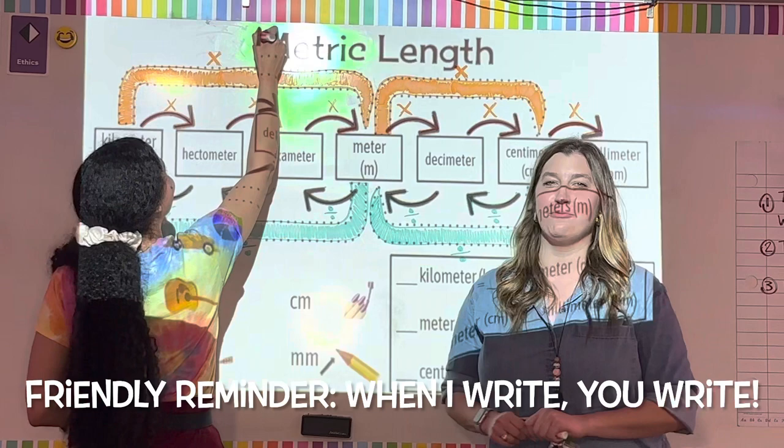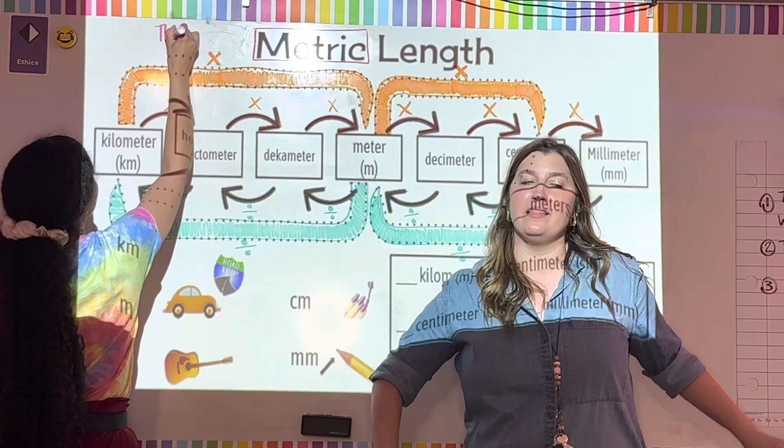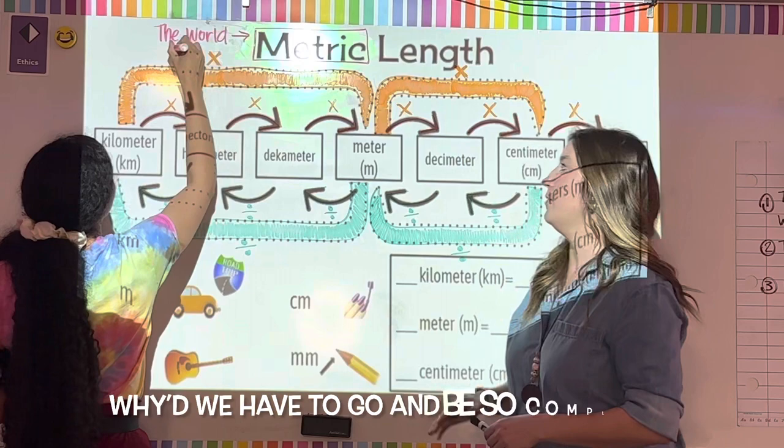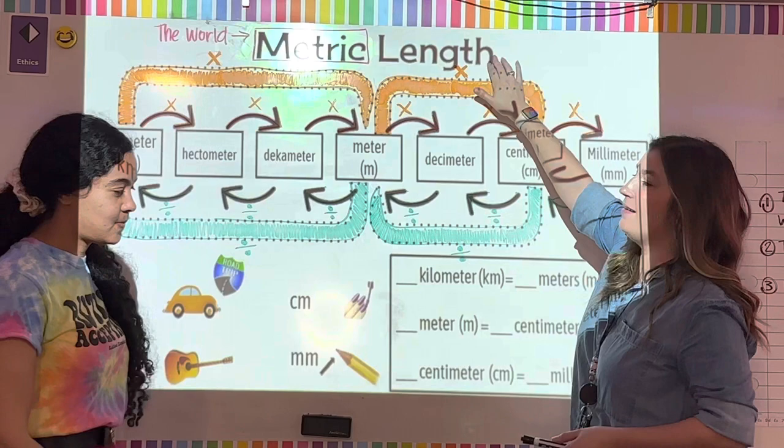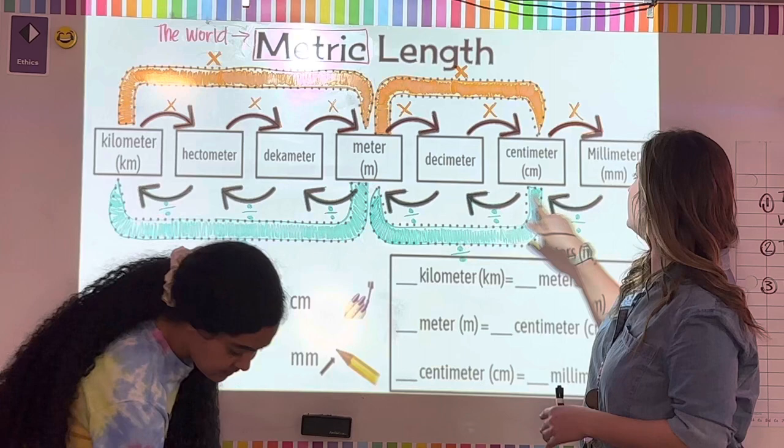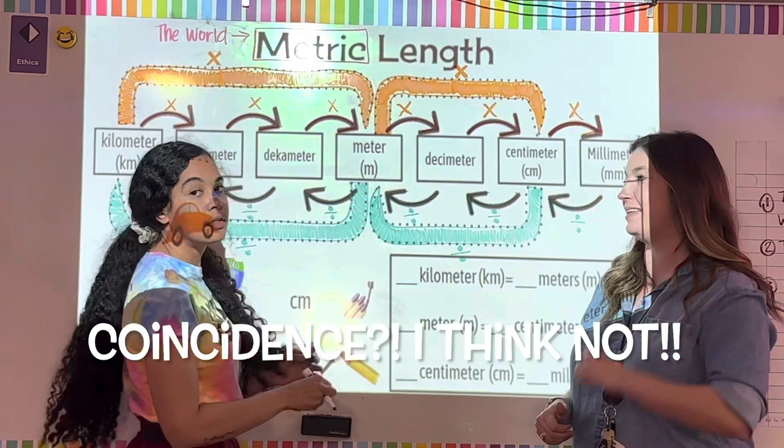We're going to talk about metric length today. When we talk about metric length, we're talking about everything used everywhere else in the world to measure length except here in America. This is used by the world. Anytime we're talking about length, we're talking about the meter family. All of the measurements end in meter, so whenever you see the word meter, it means length.